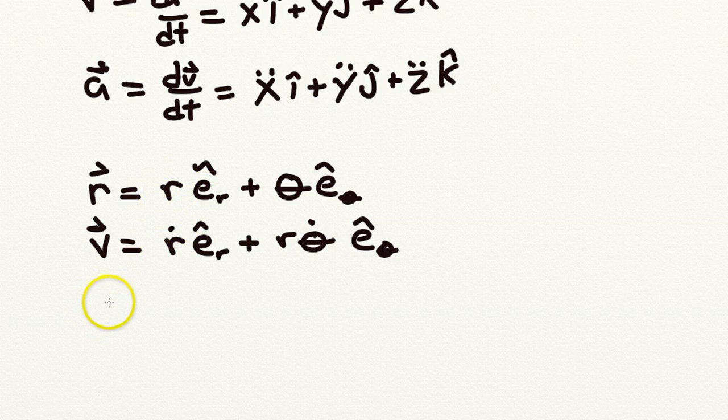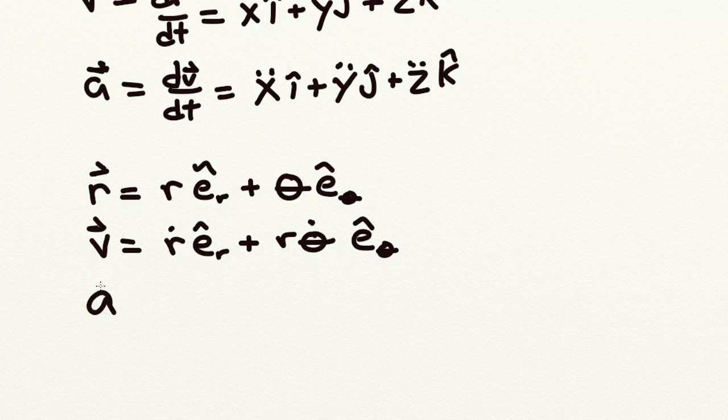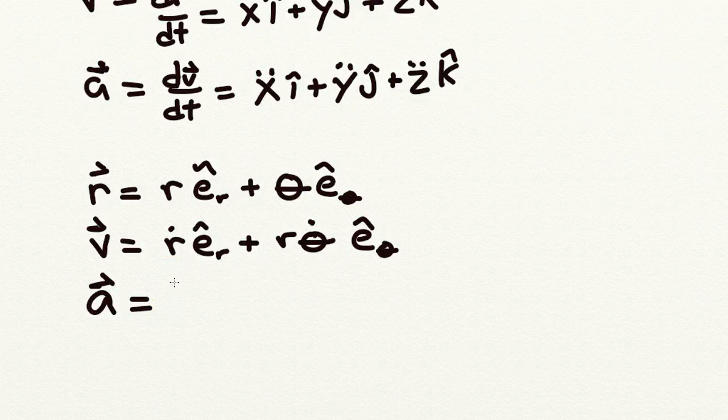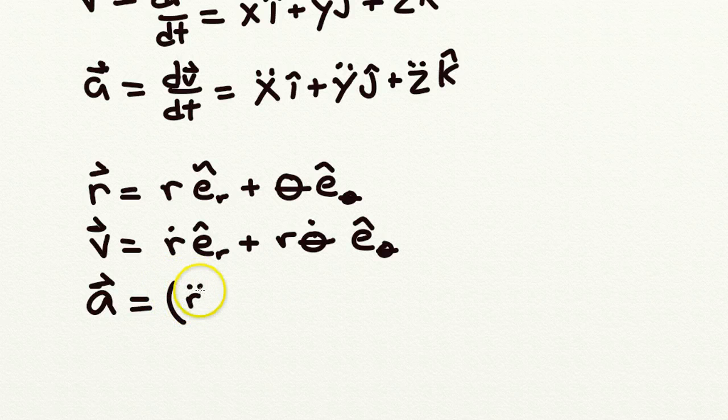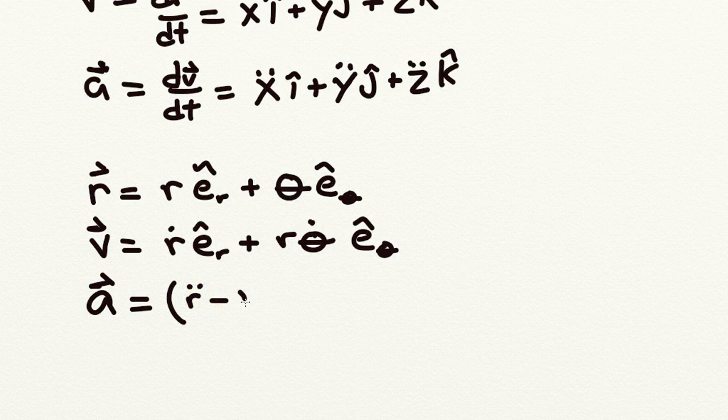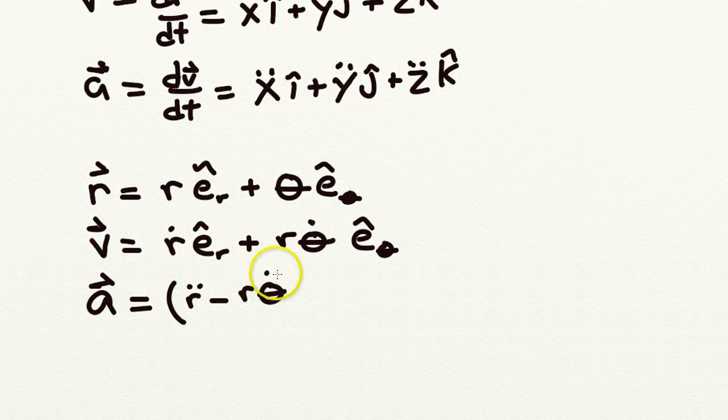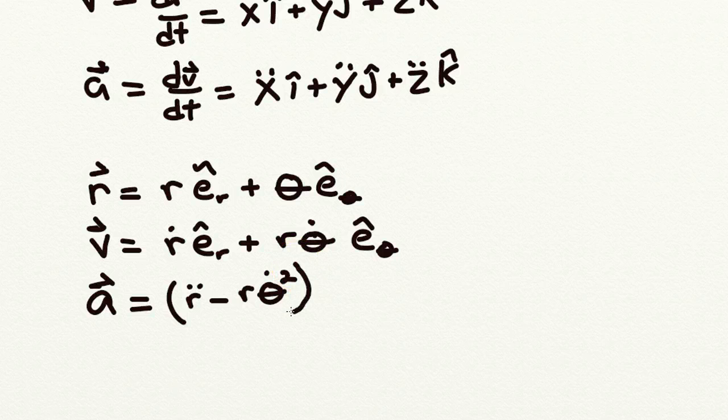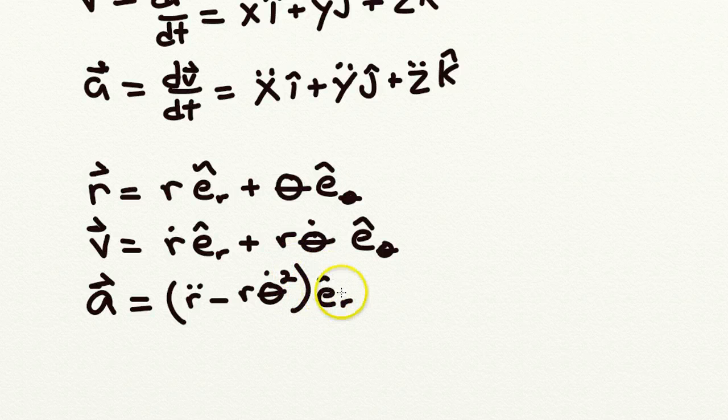And let's see how complicated this gets when we look at the acceleration. Now we've got to consider the second derivative of r, minus r theta-dot-squared, in the r e-sub-r-hat direction.